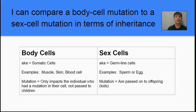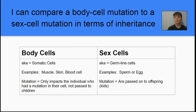Our next learning target is to compare a body cell mutation to a sex cell mutation in terms of inheritance. Body cells are also called somatic cells — examples include muscle cells, skin cells, and blood cells. If we have a mutation in a somatic cell, it's only going to affect the individual who has that mutation; they would not pass it on to their children. It's a very different story in sex cells, also known as germline or germ cells — not to be confused with bacteria or viruses. Examples in humans are sperm or egg cells. If there's a mutation in a germline cell, it will be passed on to offspring and show up in all the cells of those offspring.